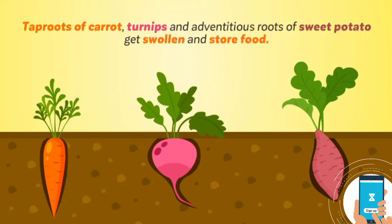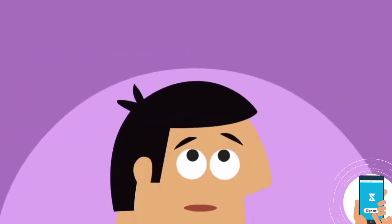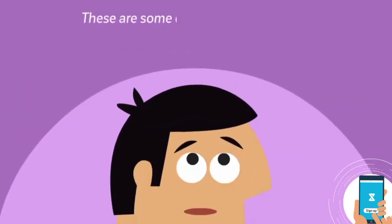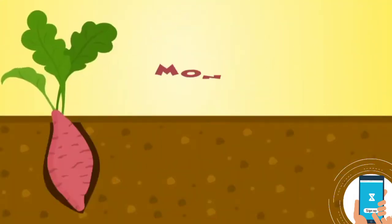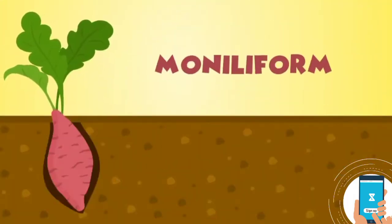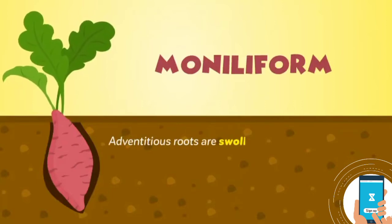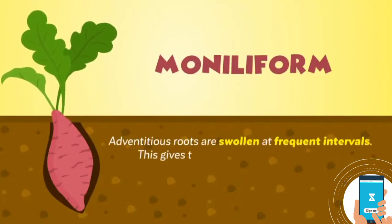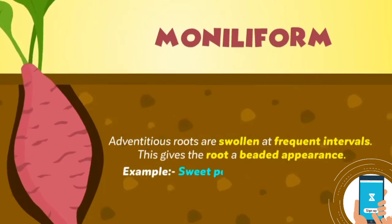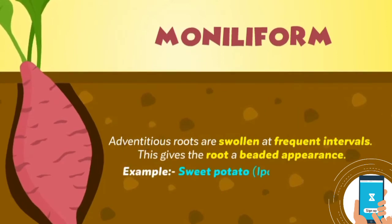Modifications for food storage: tap roots of carrot and turnips, and adventitious roots of sweet potato, get swollen and store food. These are some examples of different modifications for food storage. Moniliform adventitious roots are swollen at frequent intervals, giving the root a beaded appearance. Example: sweet potato, Ipomoea batatas.